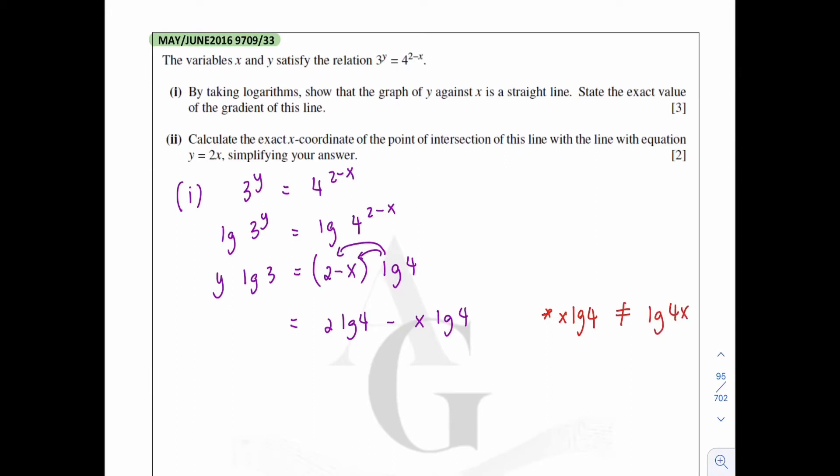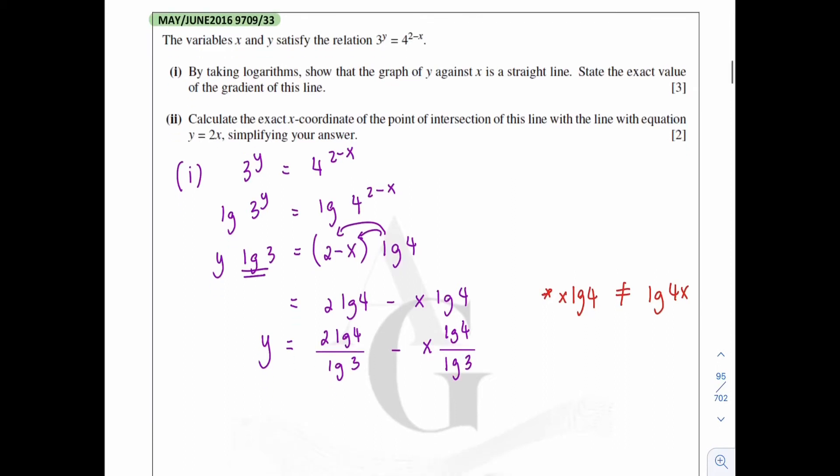x log 4 is actually not equal to log 4x. This is the common mistake made by most of the students. Alright, so let me continue. And what to do next? The log 3 here got to move over to the right-hand side. So it becomes y equals 2 log 4 over log 3 minus x times log 4 over log 3. And let me rearrange it properly.